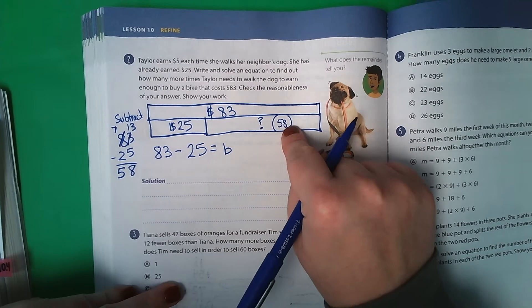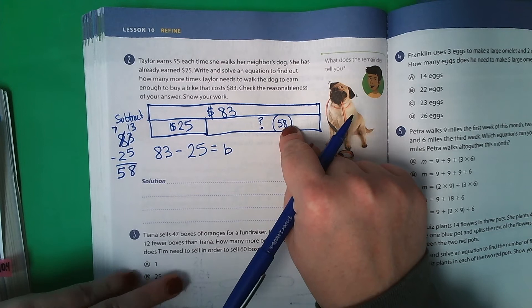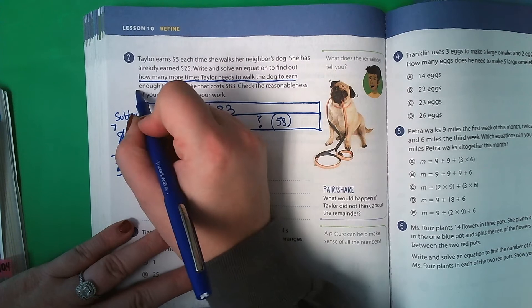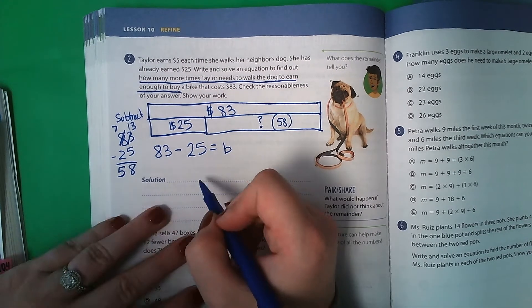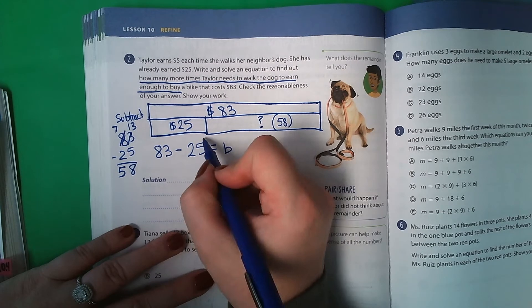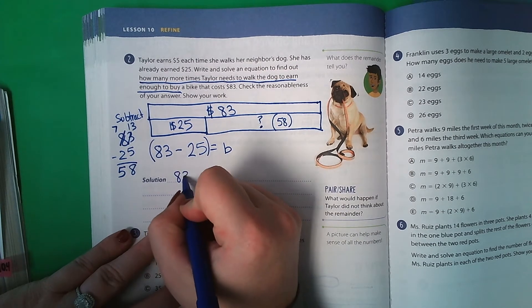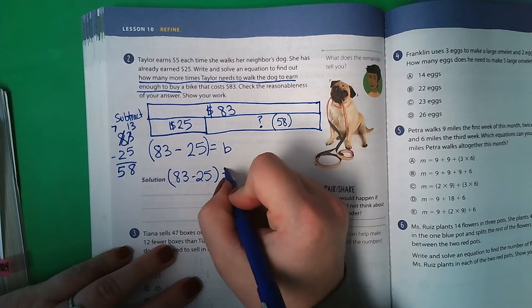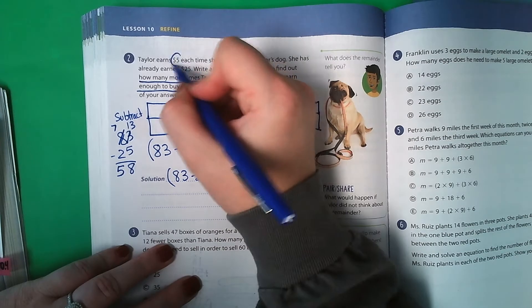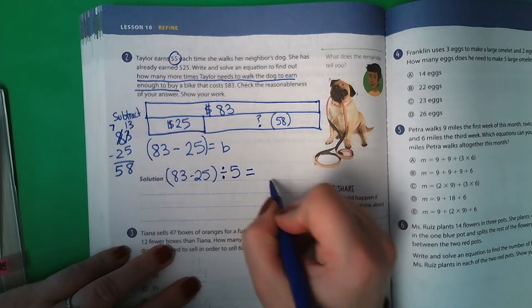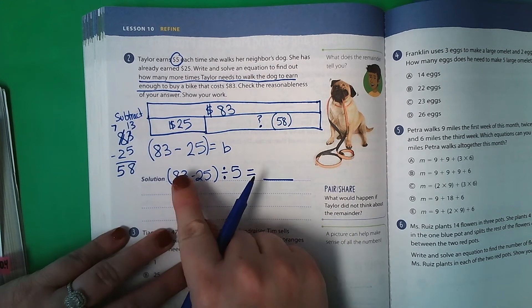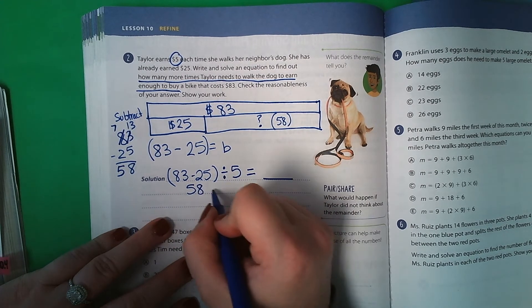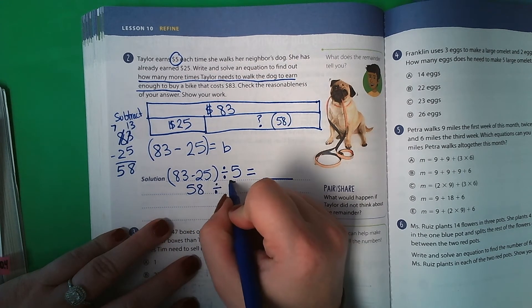But is that what we're asking, how much more she needs to earn? No. It is asking how many more times does Taylor need to walk the dog to earn enough to buy? So our problem here, we're going to start with this. So it's going to be 83 minus 25. But then we're going to have to divide it by the $5 to get our actual answer. We know that 83 minus 25 now is 58. So we have to do 58 divided by 5.